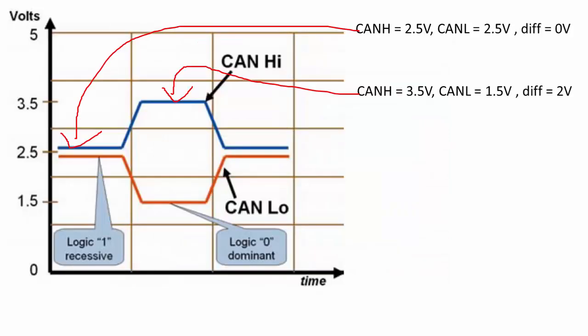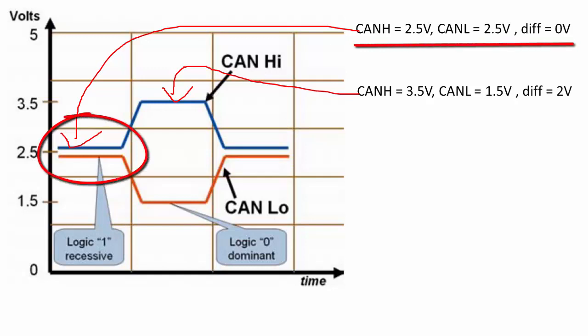Now let's understand this with an example. When you want to transmit a logical one, the transceiver will make the CAN-High signal 2.5V — that's the nominal voltage, though it need not be exactly 2.5V; it may be something like 2V or 2.3V. We'll go through the datasheet later to understand these numbers. When transmitting logical one, CAN-High will be 2.5V and CAN-Low will also be 2.5V, so the difference between these two signals will be zero.